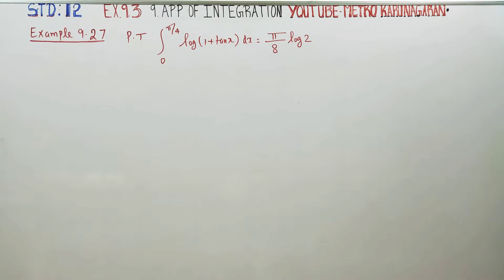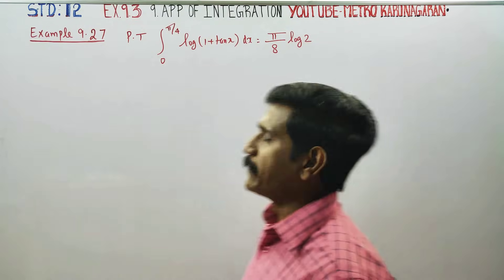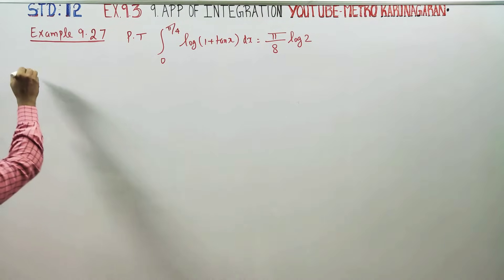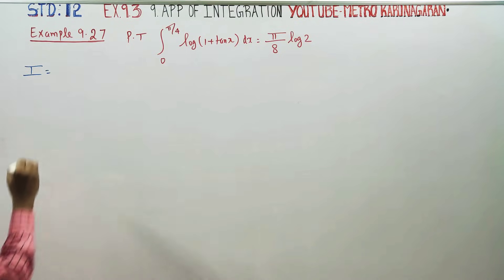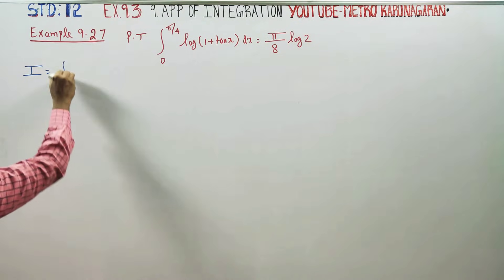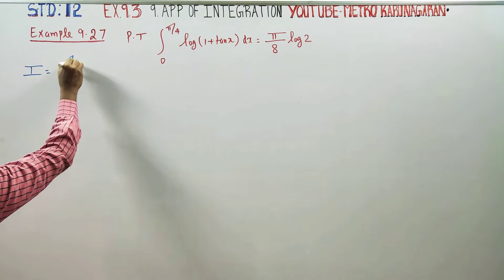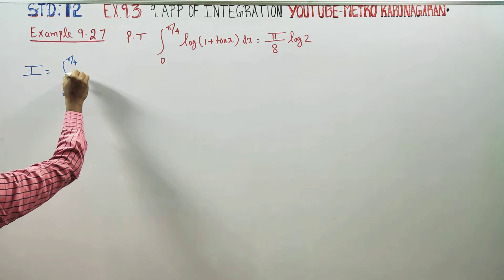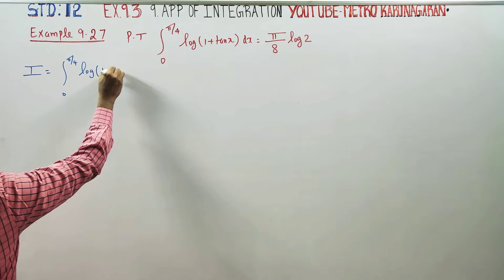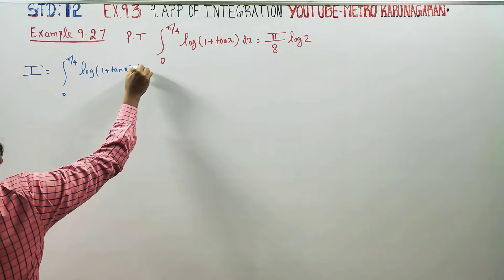Hello 12th standard students, I am Etru Karnagaran. In example 9.27, you have to prove the sum. First of all, I will consider this as i. i is equal to integration of 0 to pi by 4, logarithm of 1 plus tan x dx.